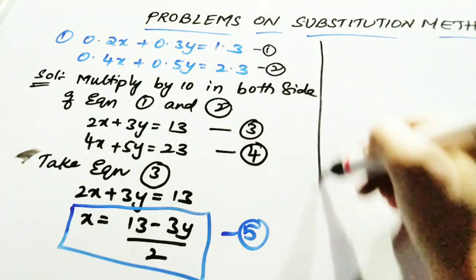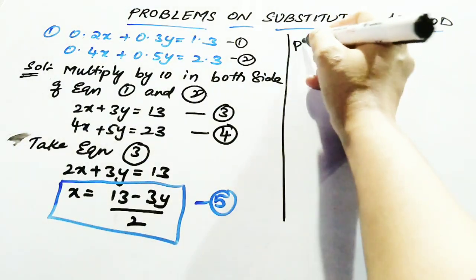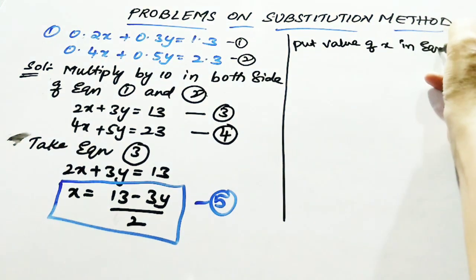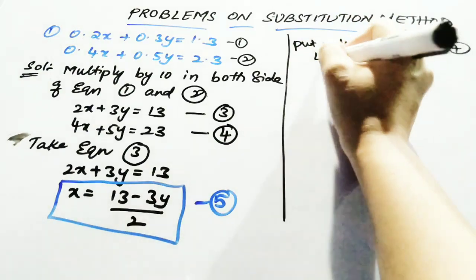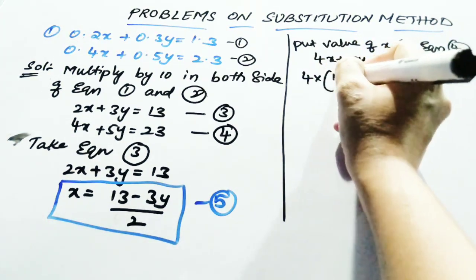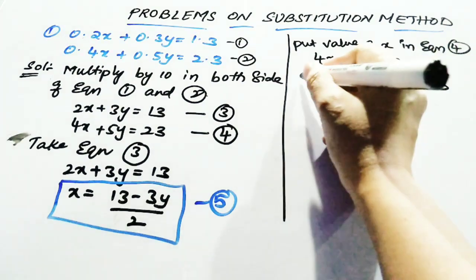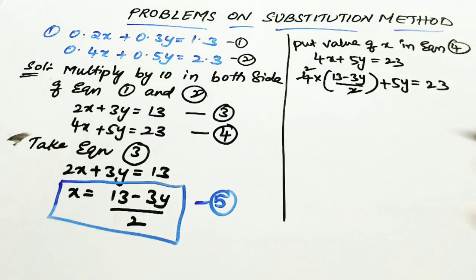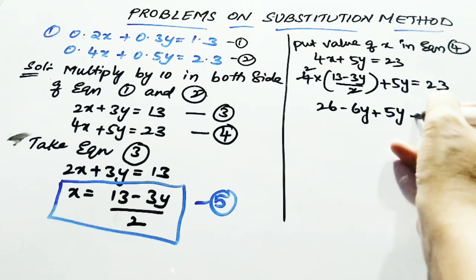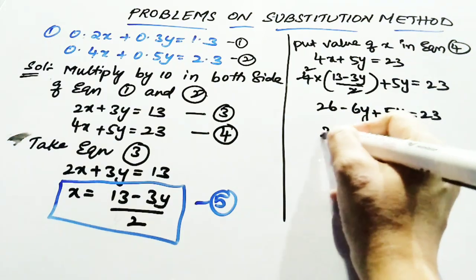Next step: put the value of x into equation 4. Equation 4 is 4x plus 5y equal to 23. Substituting: 4 into (13 minus 3y) divided by 2, plus 5y equal to 23. The 4 divided by 2 gives 2, so you get 26 minus 6y plus 5y equal to 23.